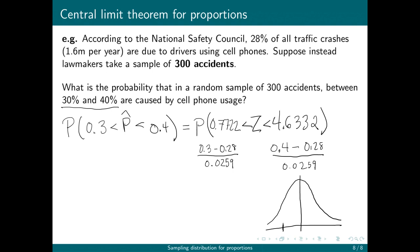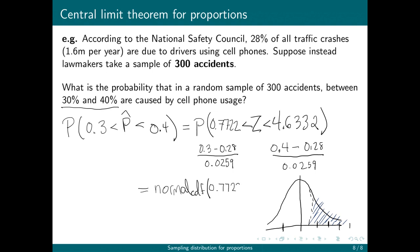So 0.7722 is about three-quarters of a standard deviation above the mean, and 4.6332 is way out in the tail. I'm looking for the area between those two Z-scores. Using normal CDF from 0.7722 to 4.6332, the area gives us approximately 22%.